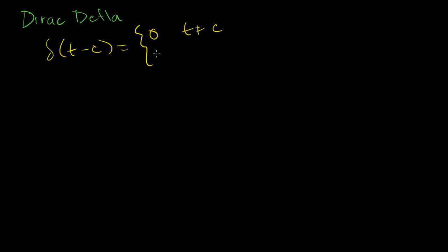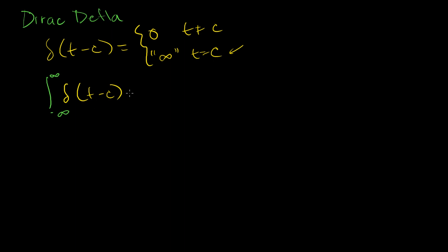It essentially pops up to infinity — and we have to be careful with this infinity. It's kind of different degrees of infinity, because you can still multiply it by other numbers to get larger Dirac delta functions when t is equal to c. More important than this pseudo-definition is the idea that when we take the integral, the area under the curve over the entire t-axis, that area is equal to 1.